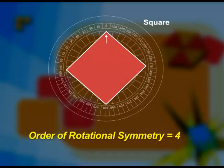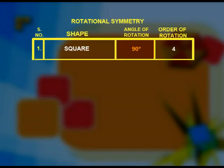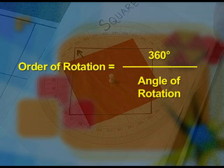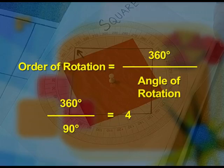Therefore, in a complete revolution of 360 degrees, the square takes its position 4 times. The order of rotational symmetry is 4. There is an important relationship between the angle of rotation and order of rotation: order of rotation equals 360 degrees divided by angle of rotation, which is 360 ÷ 90 = 4.